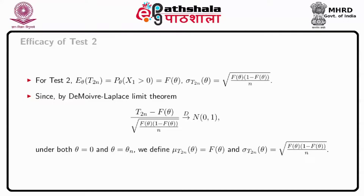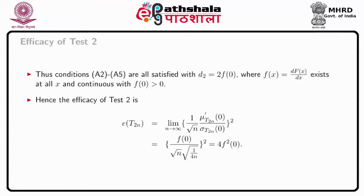Next, considering the sign test statistic, T_{2n} minus F(theta) divided by root(F(theta) times (1 minus F(theta)) divided by n) converges to Normal(0,1) in distribution by the De Moivre-Laplace limit theorem under both theta equals 0 and theta equals theta_n. Defining mu(T_{2n}, theta) equal to F(theta) and sigma(T_{2n}, theta) equal to root(F(theta)*(1 minus theta)/n), we can satisfy conditions A2 to A5, all satisfied with d_2 equal to 2*f(0), where f(x) equals dF(x)/dx exists at all x and is continuous with f(0) greater than 0.